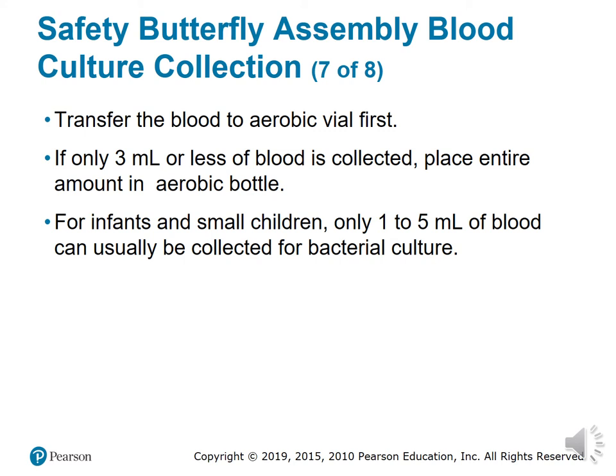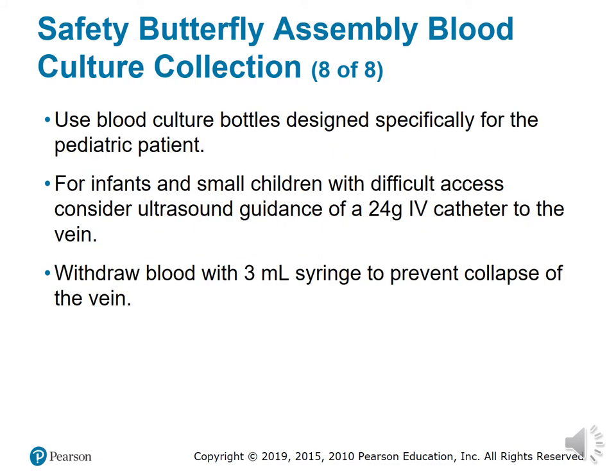Transfer blood to the aerobic vial first when using a butterfly. If only three milliliters or less of blood is collected, place the entire amount in the aerobic bottle. For infants and small children, only 1 to 5 milliliters can usually be collected. With difficult access, consider ultrasound guidance of a 24-gauge IV catheter and withdraw blood with a 3-milliliter syringe.